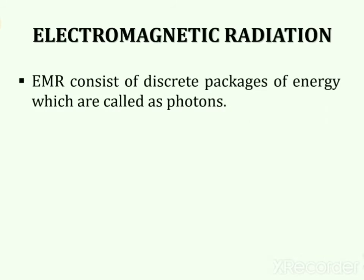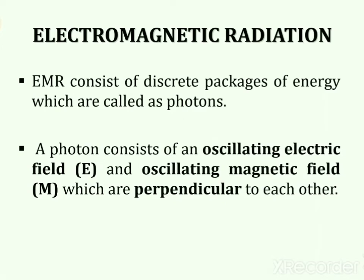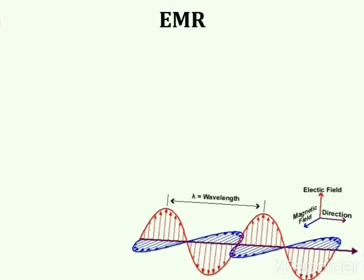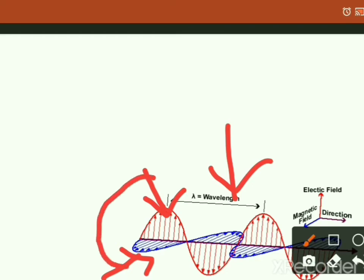Electromagnetic radiation consists of discrete packages of energy called photons. A photon consists of an oscillating electric field, represented by E, and an oscillating magnetic field, represented by M, and they are perpendicular to each other. In the picture, you can see a wave-like structure: the red wave represents the electric field and the blue wave represents the magnetic field; together they make electromagnetic radiation.